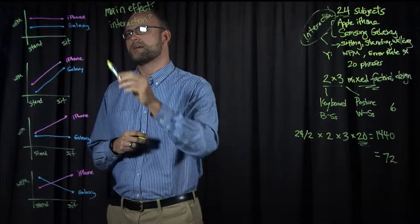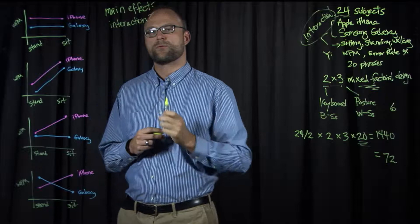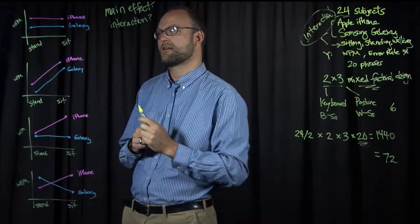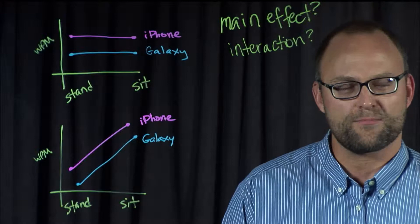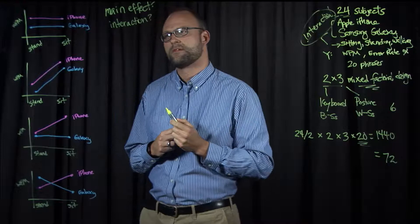Well, let's take a look. In this first graph, we can see that in both standing and sitting, the keyboards stay roughly the same. But there is a gap between the lines of the two keyboards. So we can ask, do we have a main effect of keyboard? The answer is yes. Assuming there are small variances around these data points, there's some separation between the iPhone's performance and the Galaxy's performance. That would mean we have a main effect of keyboard.